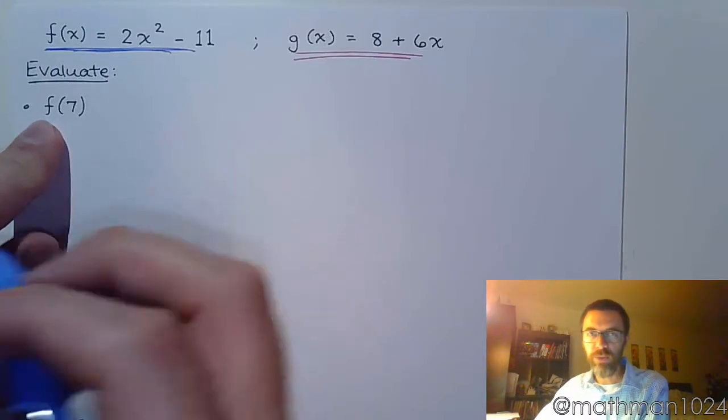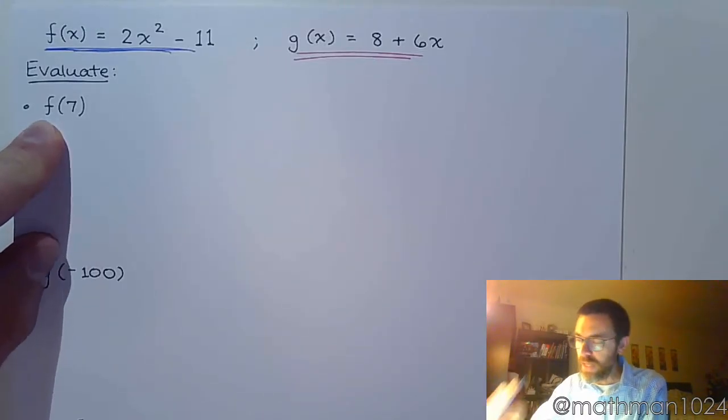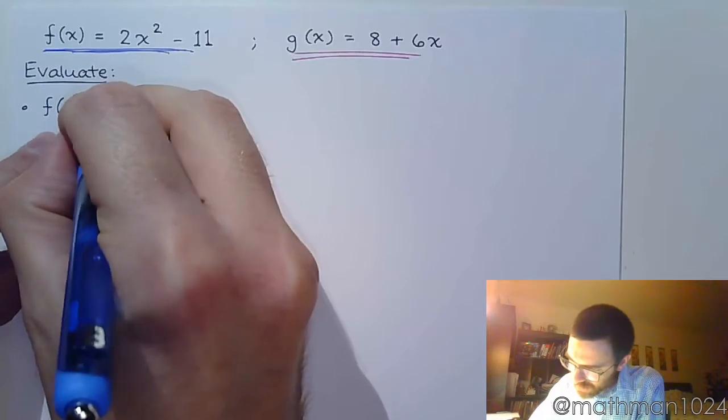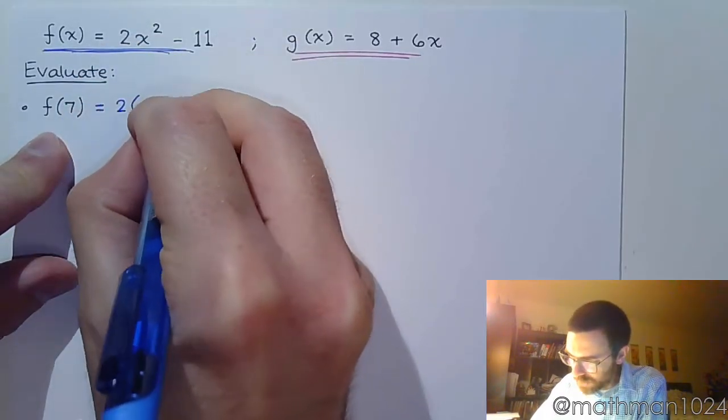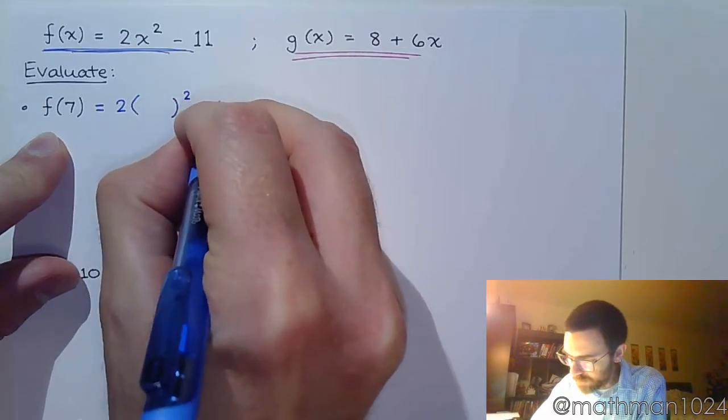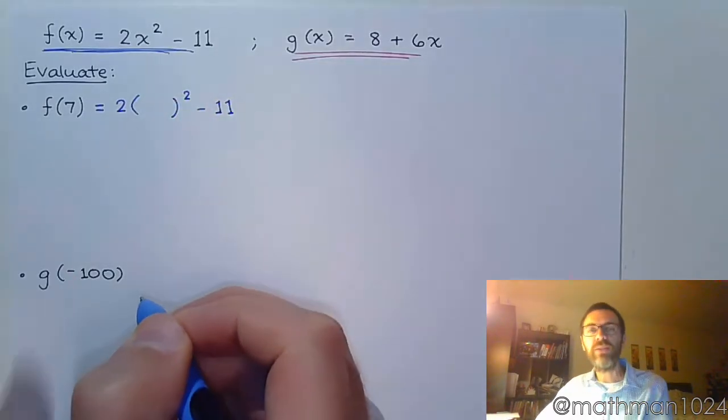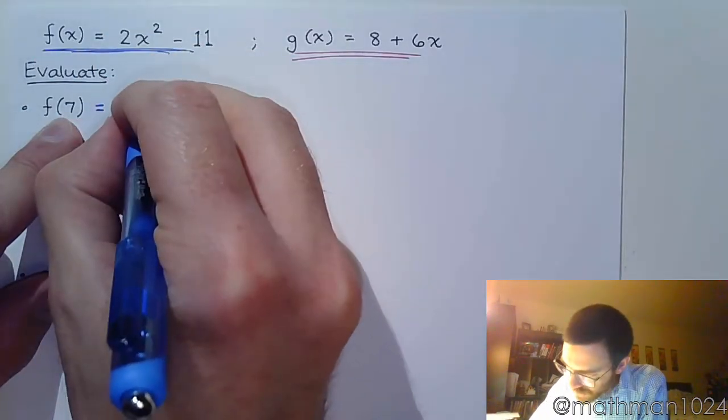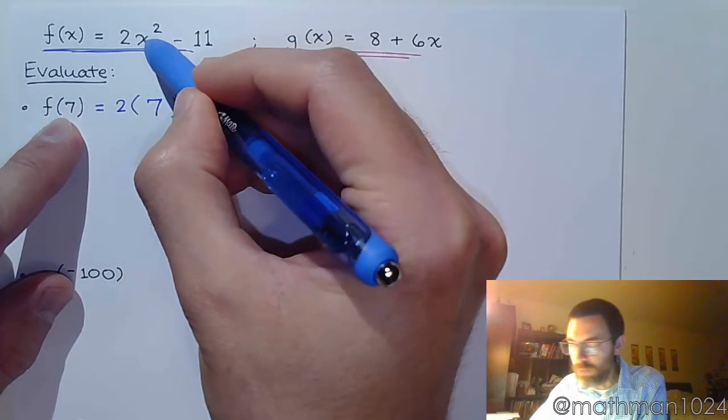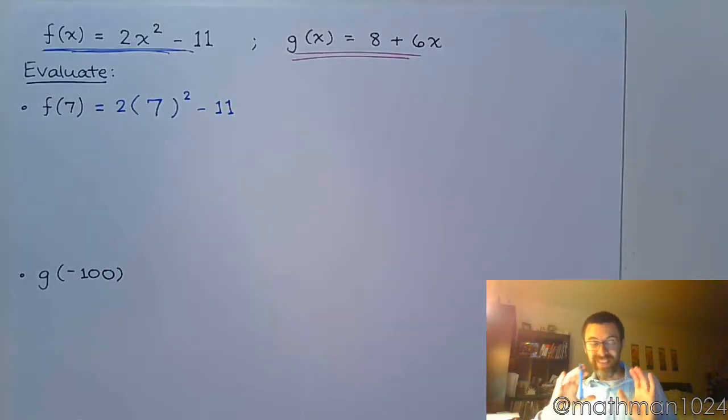So when I see f, I'm going to be thinking blue pen and that means I'm going to take this function and instead of writing x, I'm going to write a set of parentheses. And inside the parentheses, I'm going to take this input value of 7, so I'm replacing the x right here with 7. That's pretty much it. You replace the x with a given value and you do the arithmetic.